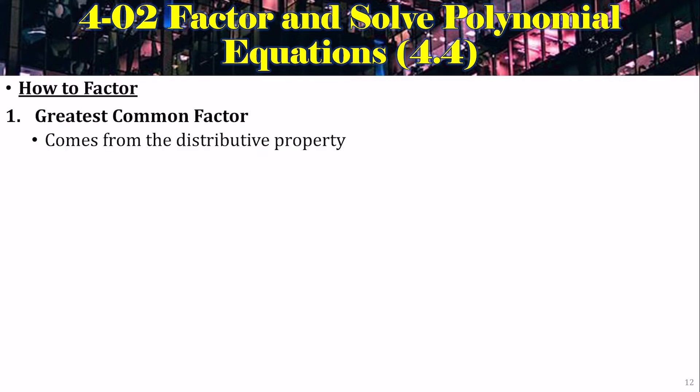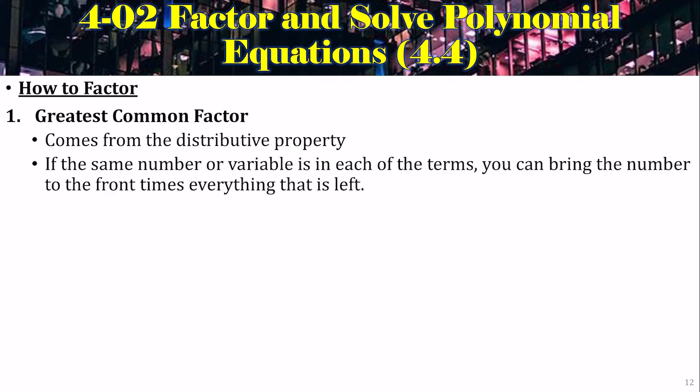Step 1 — this is always the first step — look for the greatest common factor. That's the same thing that's in each of the terms; just factor that out. The same number or variables in each of the terms, you can bring that to the front times everything that is left.